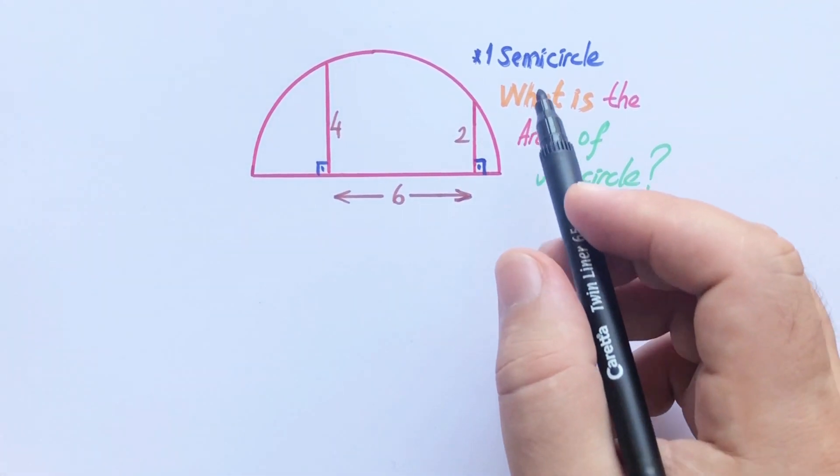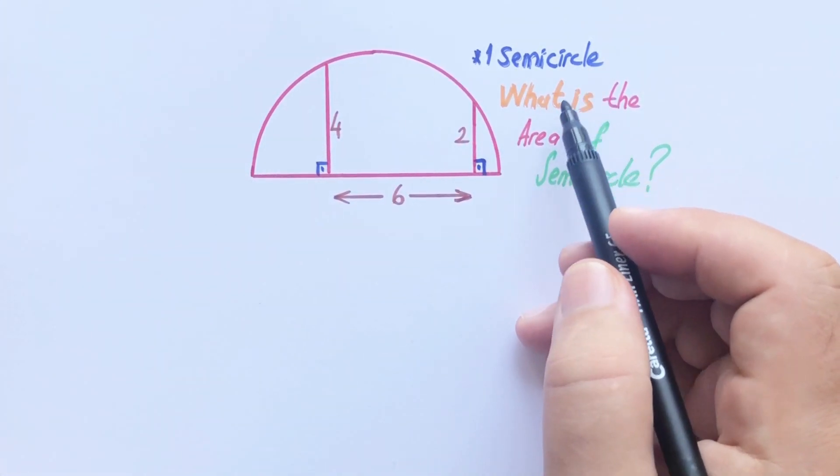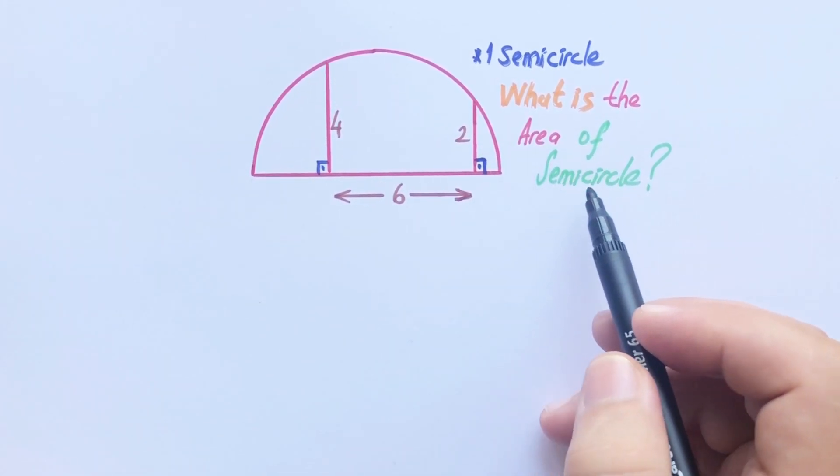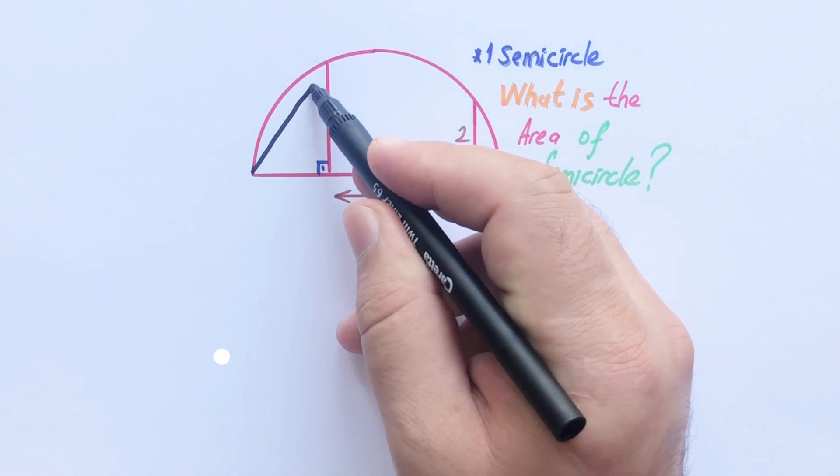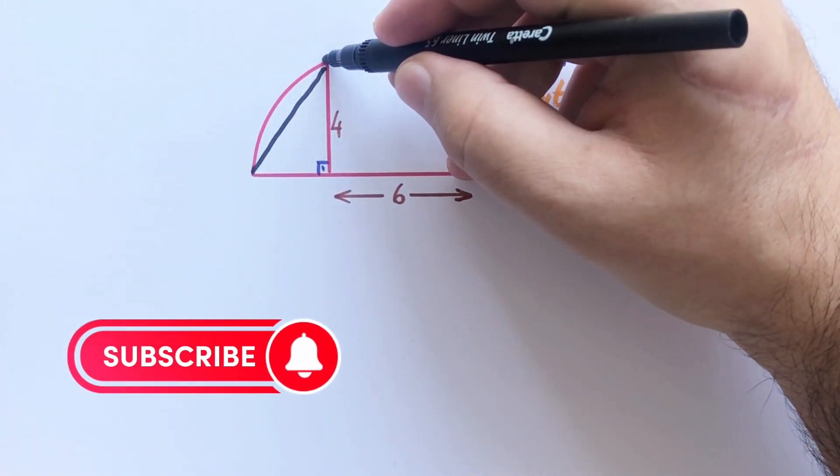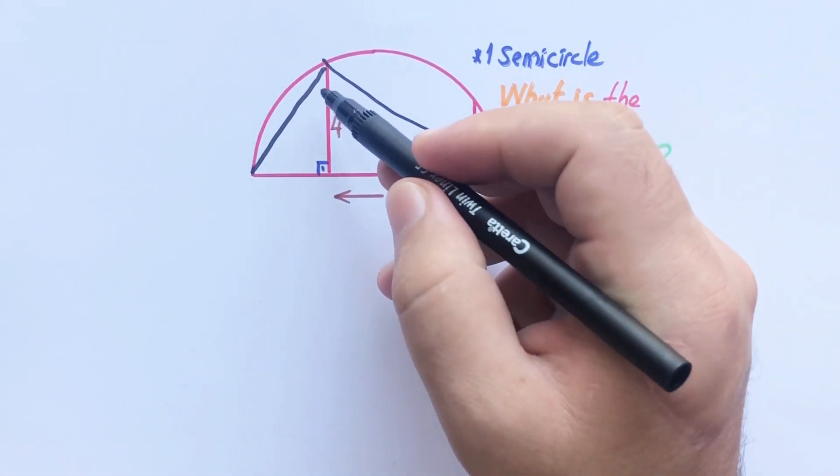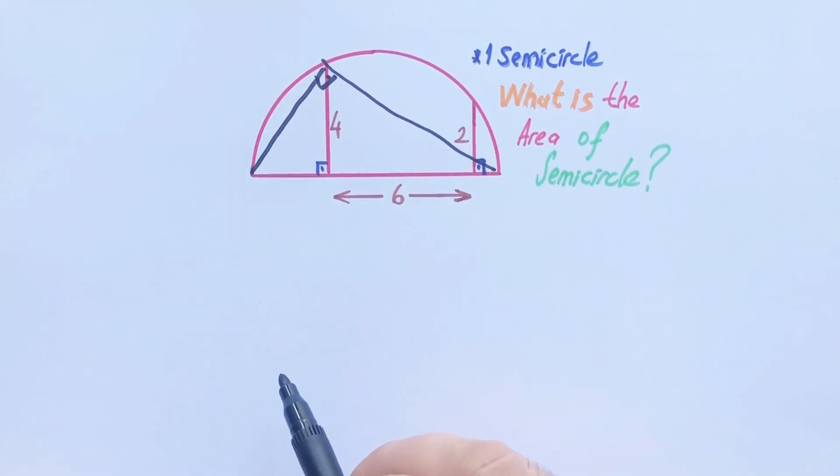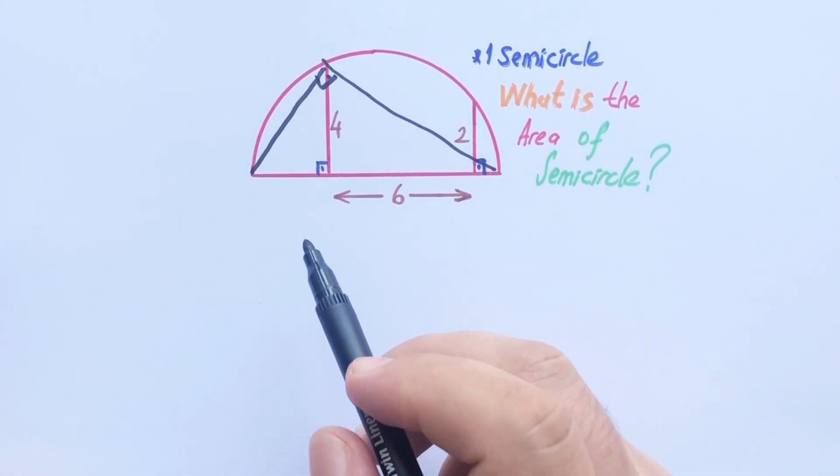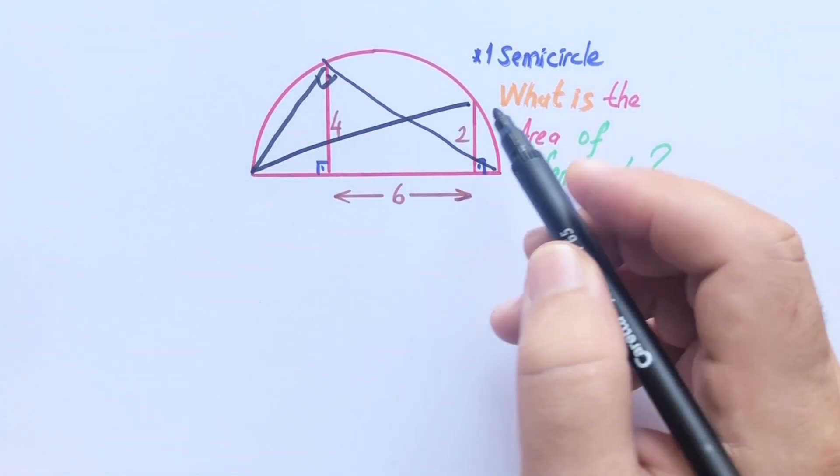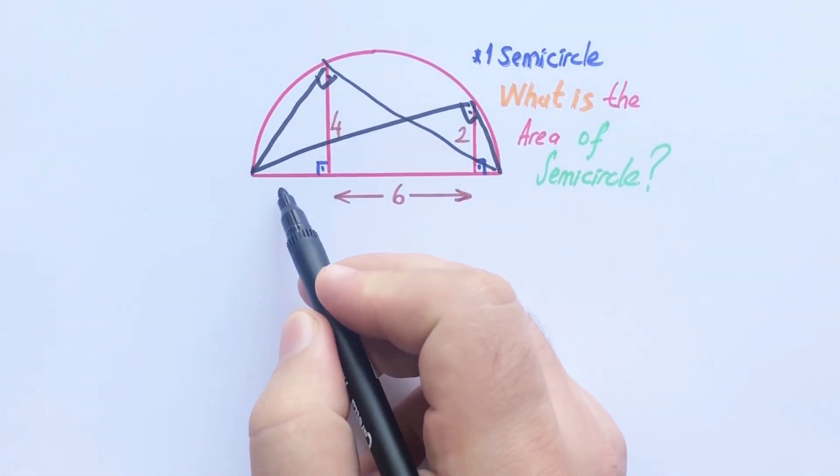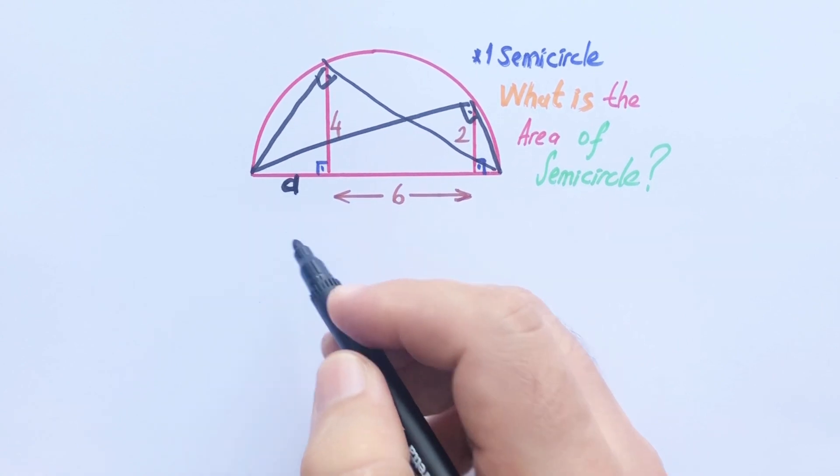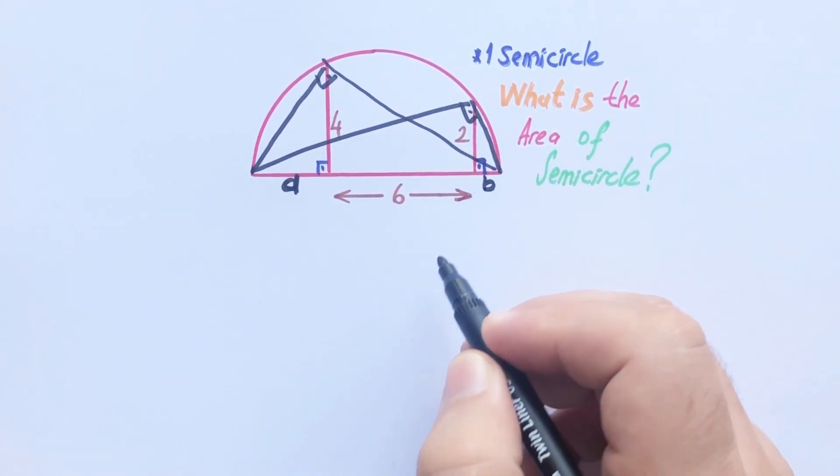Hello everyone, in this video we have one semicircle and we will calculate this semicircle area. If we draw like this, here must be 90 degrees because it's across the diameter. So this angle is also 90 degrees. Let's call these two lengths a and b.